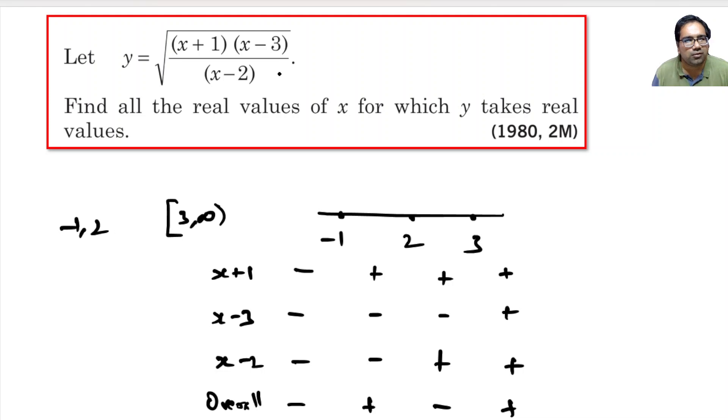What about 2? We cannot include 2 because 2 is in the denominator, it becomes undefined. So, open bracket 2. And minus 1 we can include. Minus 1 + 1, then this will become 0. This expression will become 0, that is still fine.